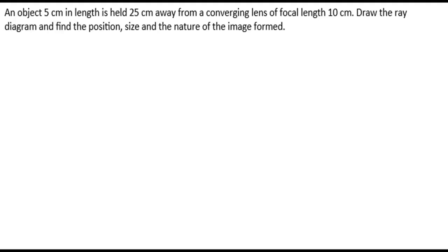Hello everyone, let's understand this question. An object 5 cm in length is held 25 cm away from a converging lens of focal length 10 cm. Draw the ray diagram and find the position, size and nature of the image formed. First of all, let's write the given data.